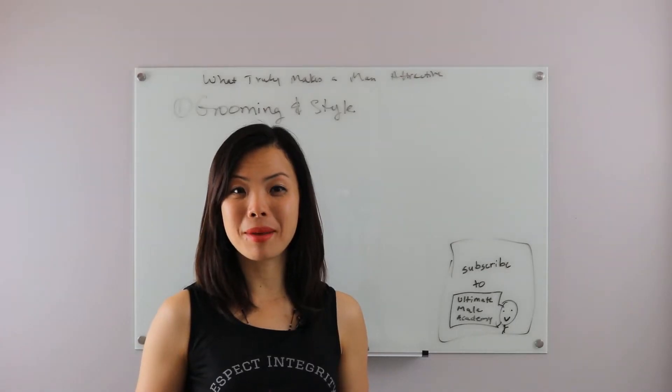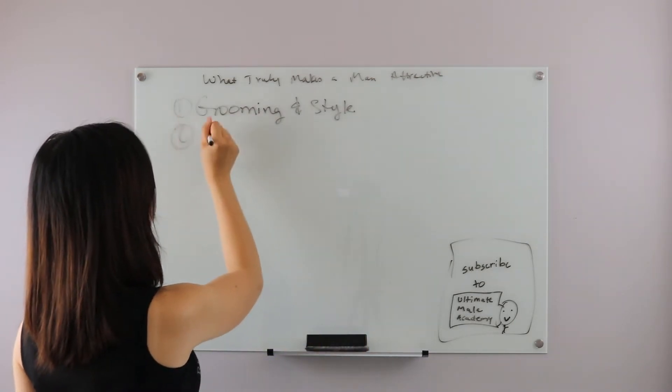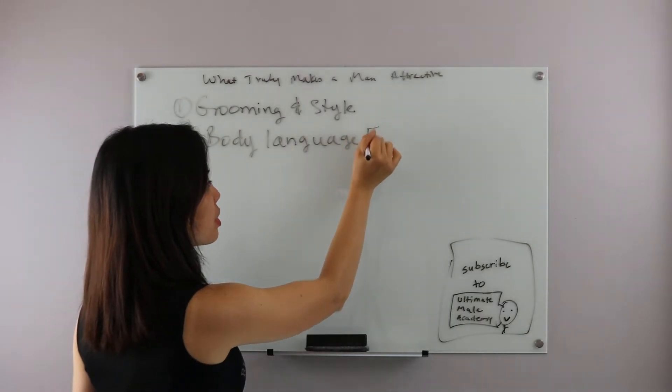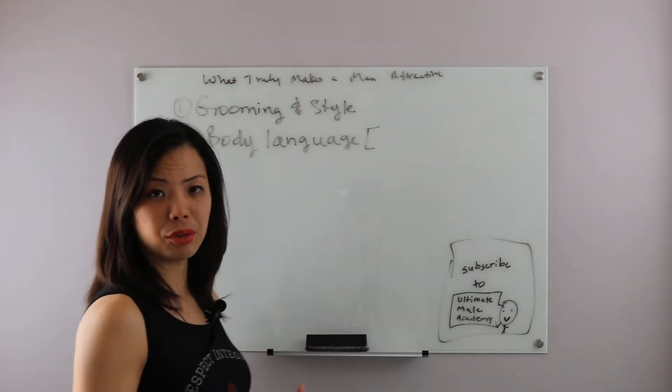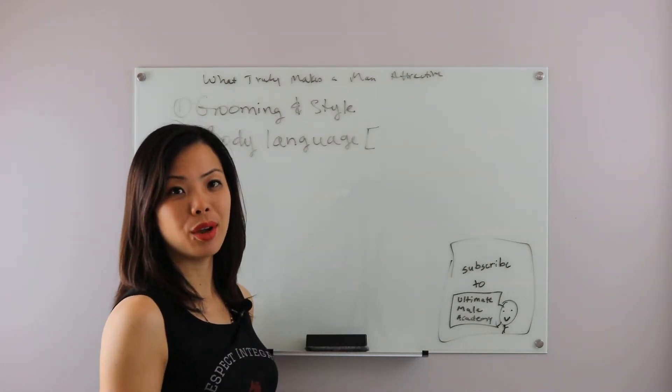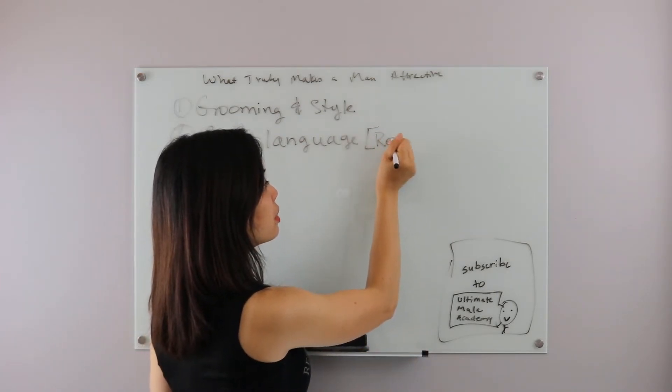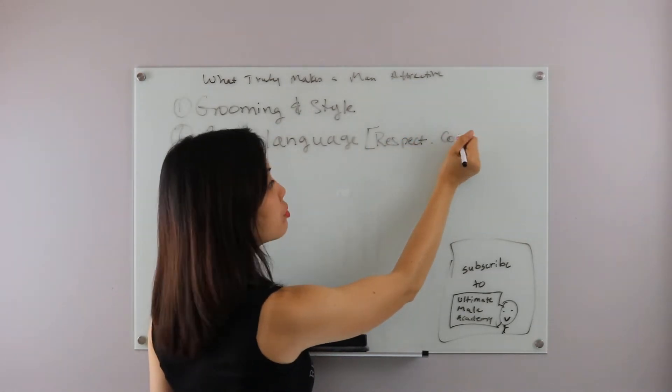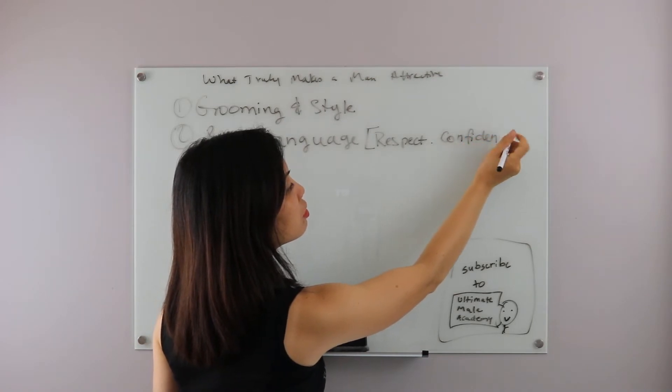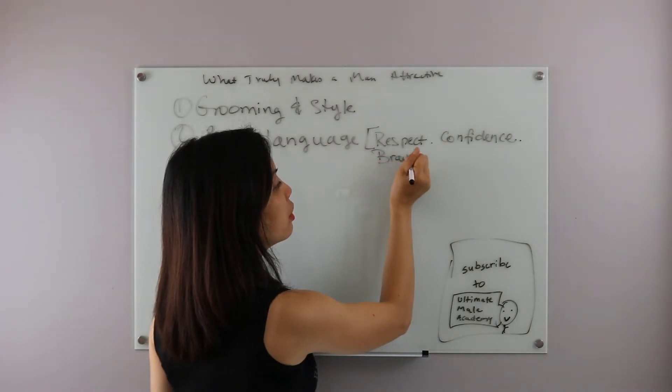The second thing that makes a man attractive is actually his body language. Your body language says a lot about you. Before anyone says anything to you, they judge you based on how you present yourself through your body language. Your body language can convey respect, confidence, as well as bravery and your masculinity.